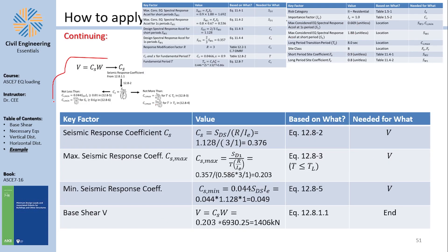Now for the grand finale — finding the base shear. The seismic response coefficient Cs from the basic Equation 12.8-2 is Sds / (R/Ie). We apply that equation.